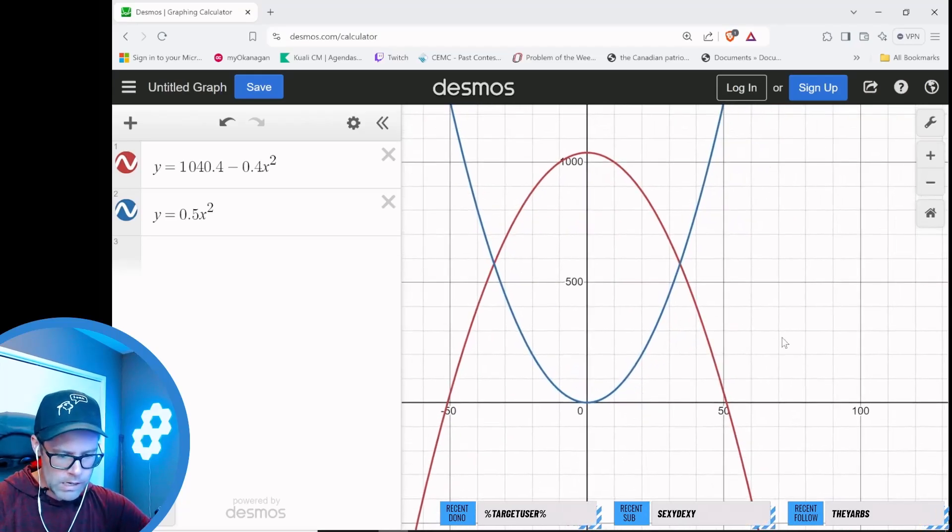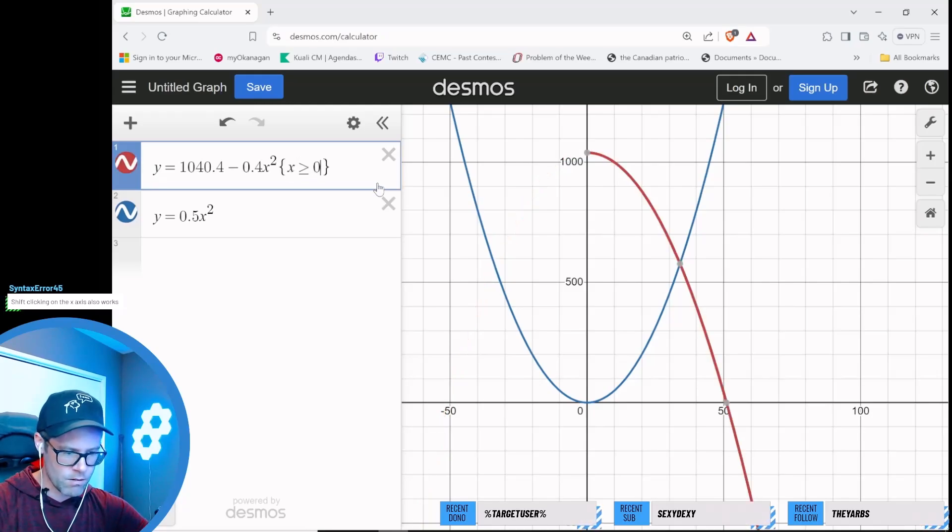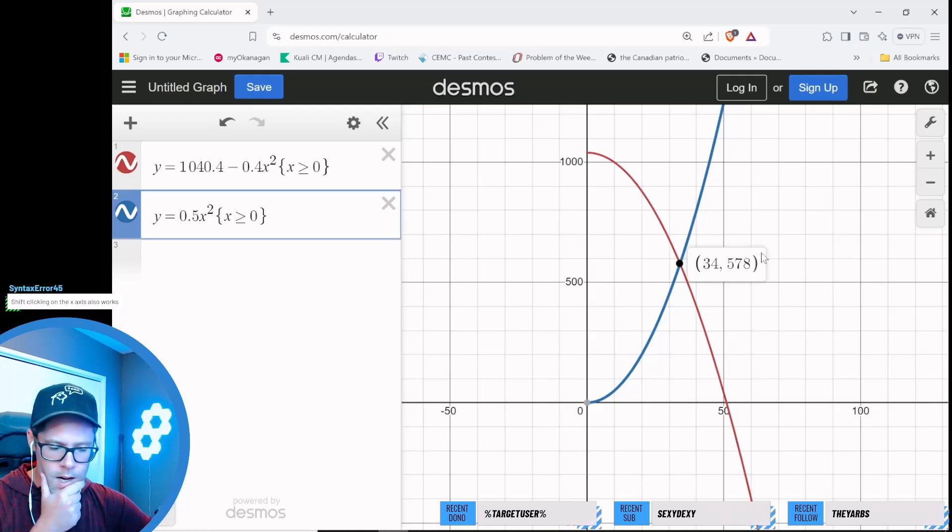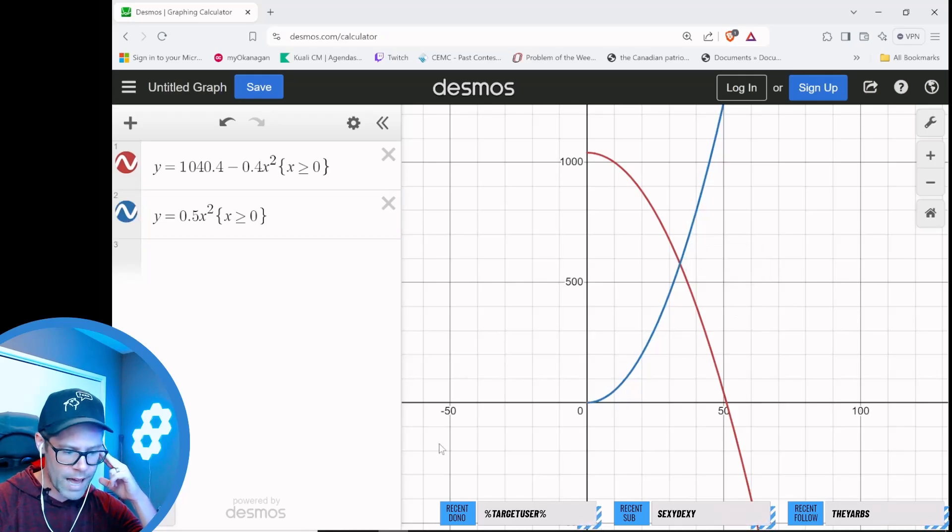We're around 100, so I probably only need the x values between negative 100 and positive 100. X and y represent quantity and price—these can only be positive, so we only need x greater than or equal to 0. Where the supply and demand curves meet is where we expect the equilibrium price and quantity, around 34 items and $578.